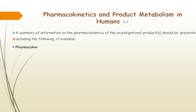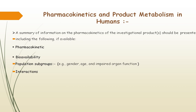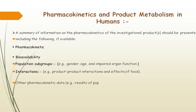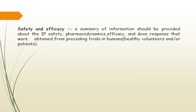Where available, the pharmacokinetic data should include bioavailability, population subgroup data — covering age groups, gender, and impaired organ function — and drug interactions such as product-product and food-drug interactions, as well as other pharmacokinetic data like results of population studies performed within the clinical trial. Very importantly, a safety and efficacy summary should be provided, confirming whether the investigational product is safe and pharmacodynamically effective with good efficacy.